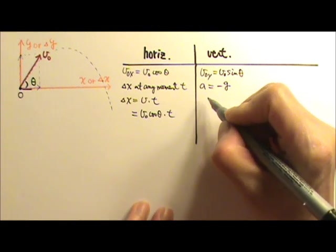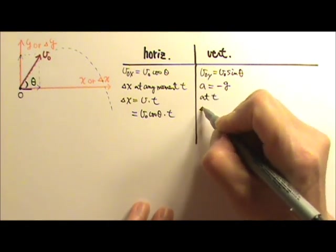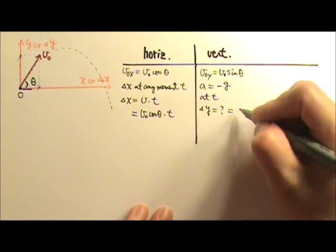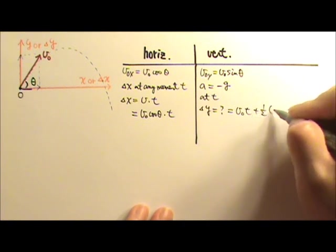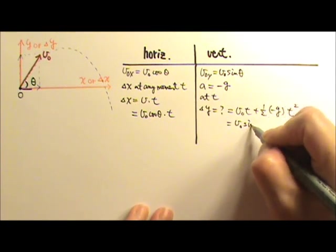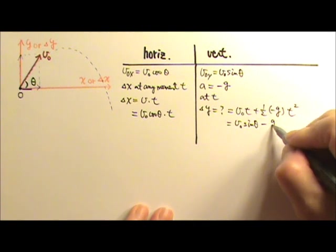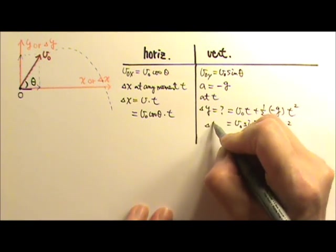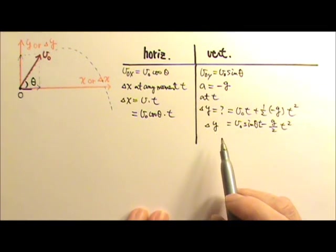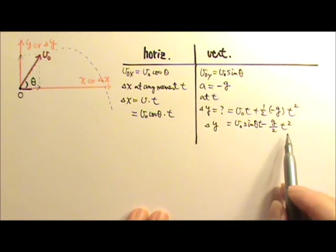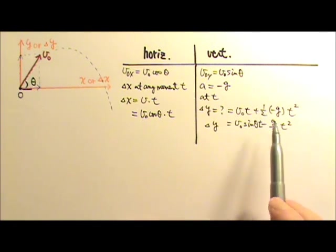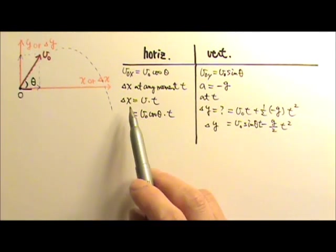Same thing on this side. At any moment t, what is the delta y? There is no final velocity. So we can say delta y is VO t plus one-half at squared, and the VO is VO sine theta minus g over 2 times t squared. Now instead of writing the delta y as a function of t, now I want the delta y as a function of delta x. That means I can substitute t in terms of delta x.